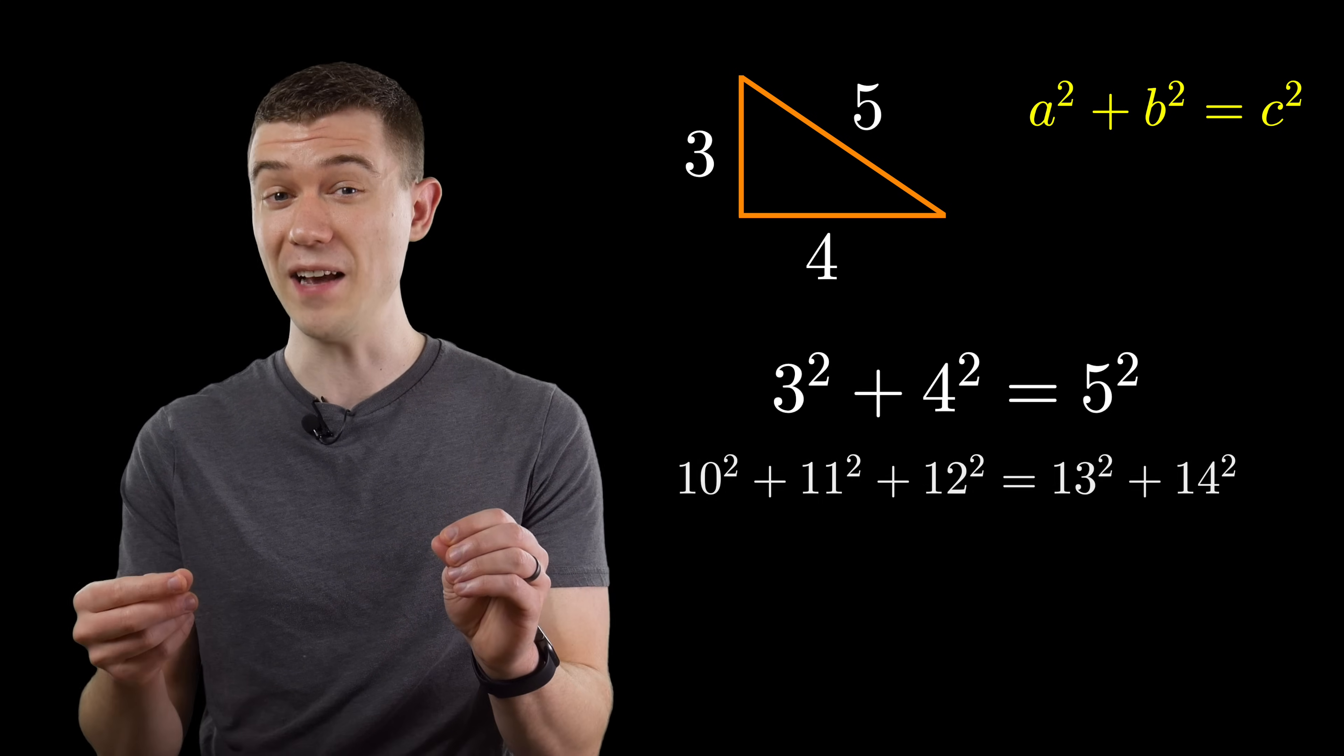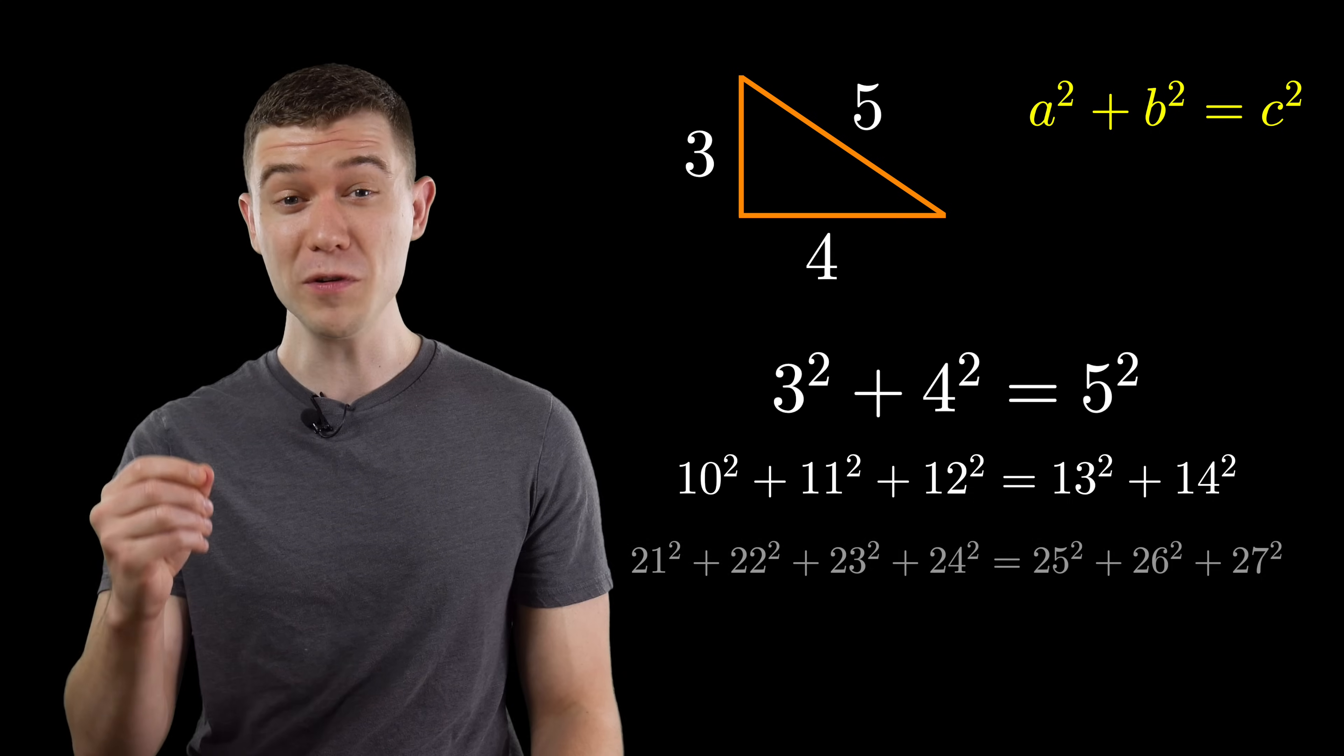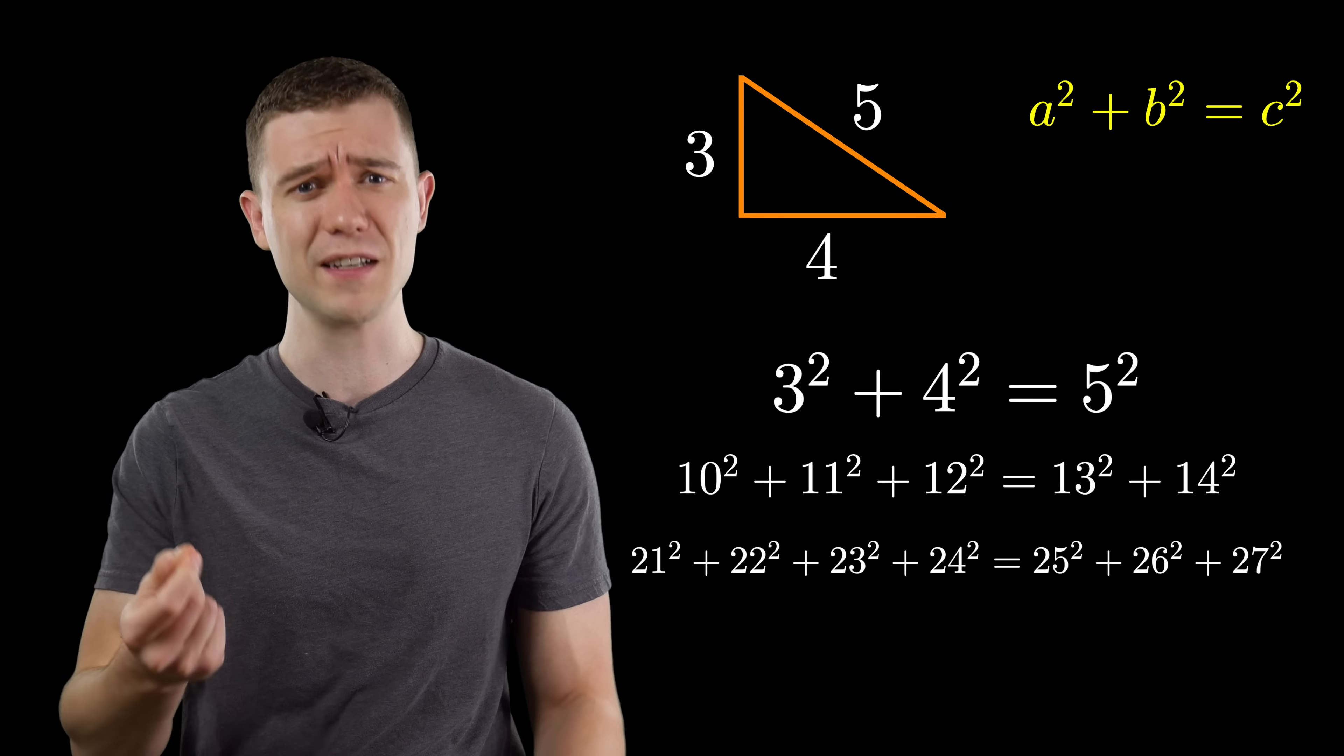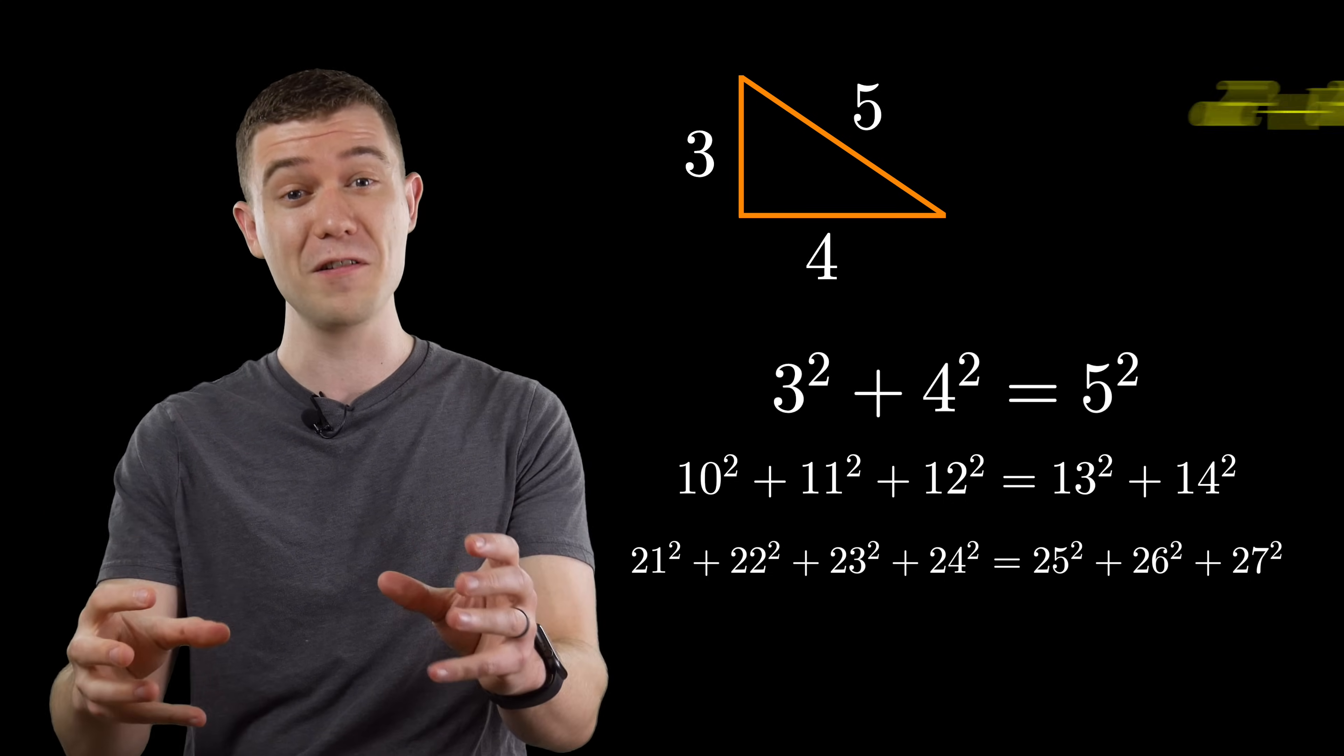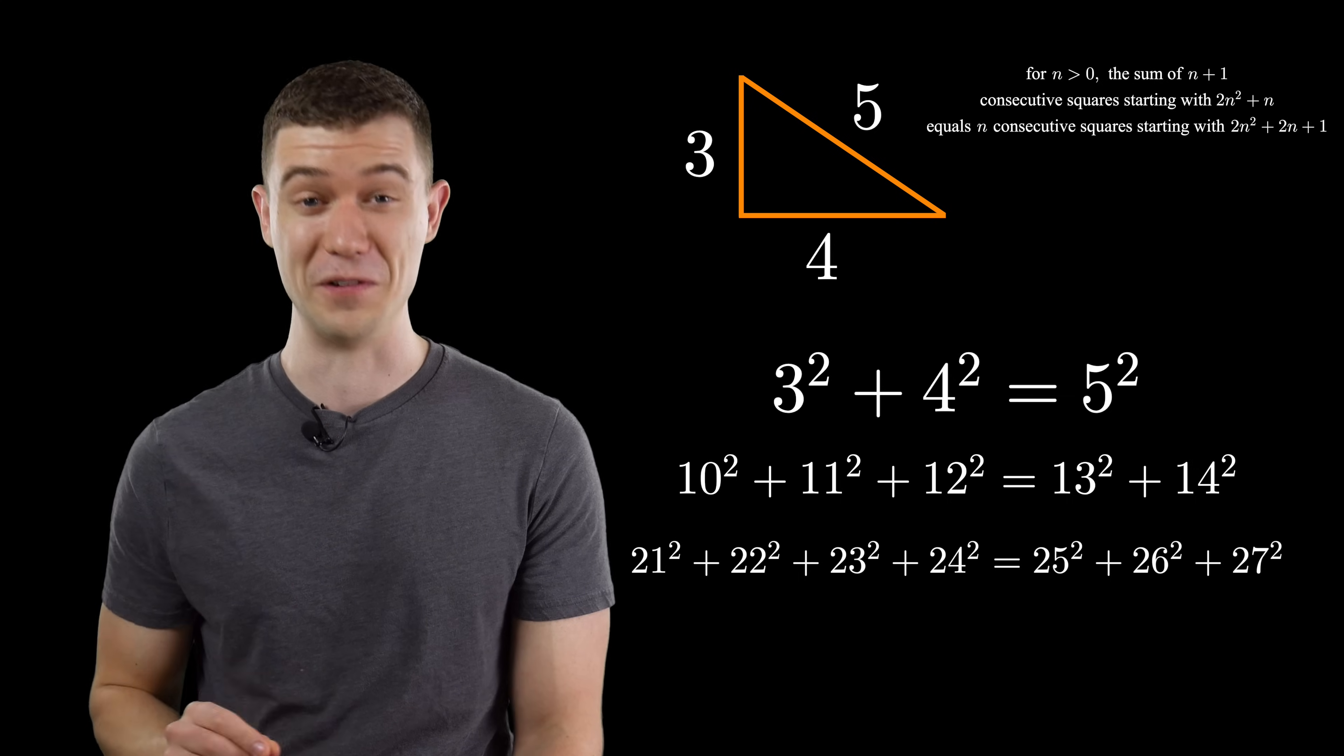10 squared plus 11 squared plus 12 squared is 13 squared plus 14 squared. And it goes farther than that. 21 squared plus 22 squared plus 23 squared plus 24 squared is the same as 25 squared plus 26 squared plus 27 squared, on and on forever according to a pattern. If these consecutive squares don't get you a little bit interested in number theory, I don't know what will.